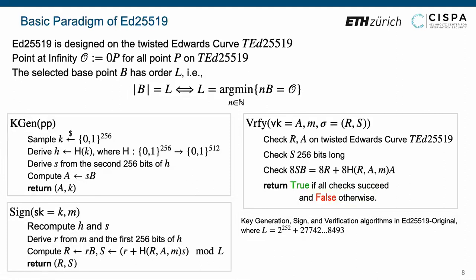The signing algorithm inputs a secret key and a message M. The signer first recomputes the value H and S as in the key generation algorithm. Then, it derives a value R from the message M and the first 256 bits of H. Finally, it computes big R equals small r times B, and big S equals small r plus hash of big R big A M times S modulo L, and outputs big R and big S as signature.